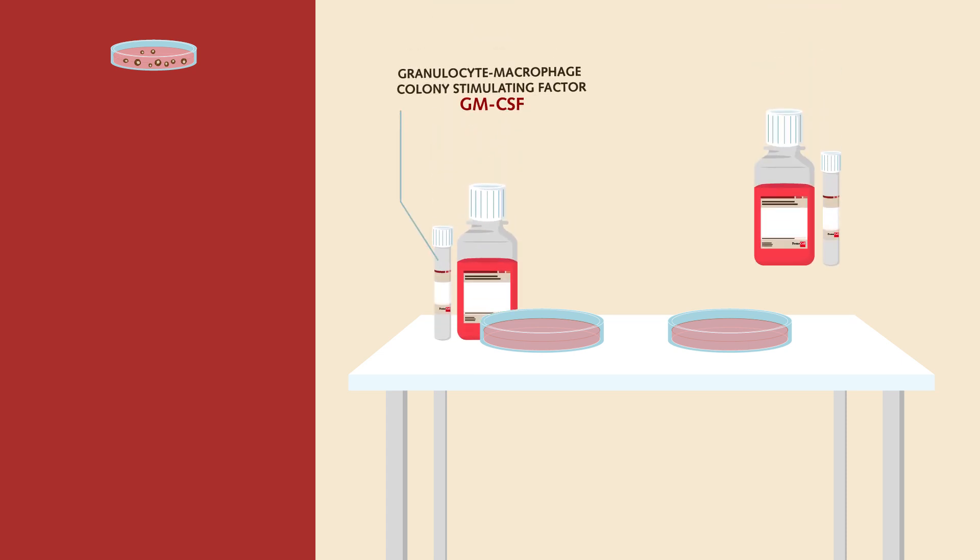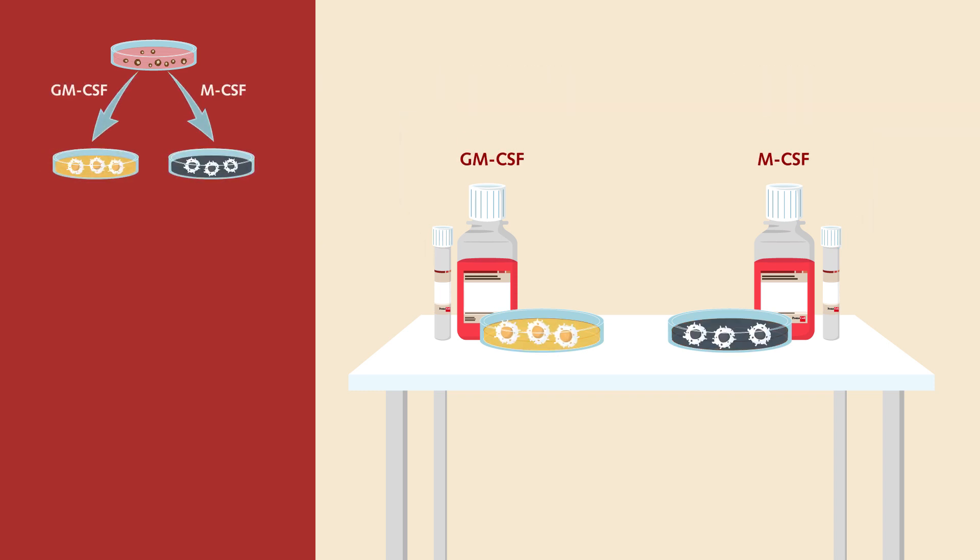This variety of phenotypes in vivo needs to be taken into account for in vitro research as well. By using animal-free media containing various stimulating factors like granulocyte macrophage or macrophage colony stimulating factors, monocytes polarize into M1 or M2 macrophages.